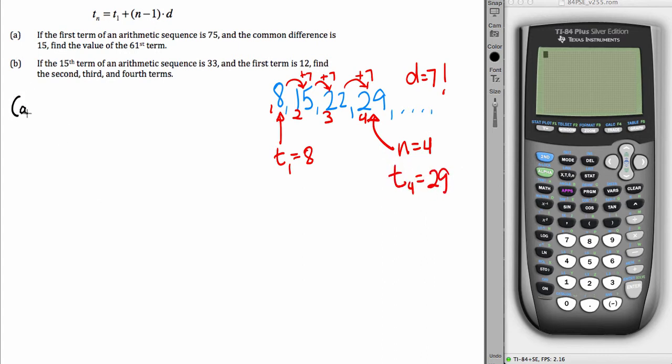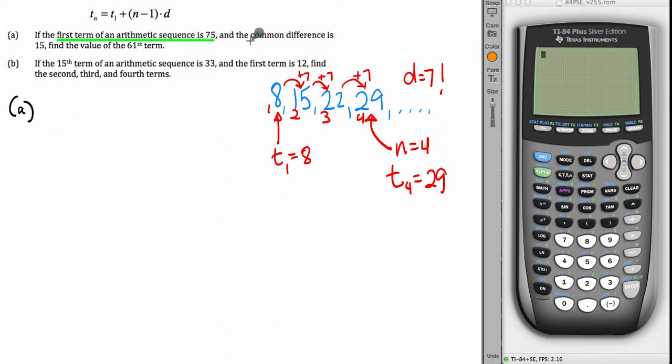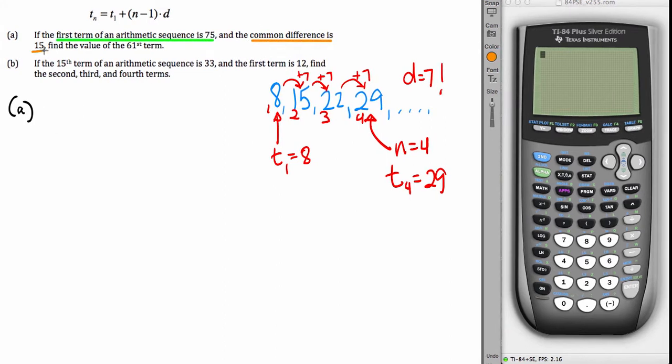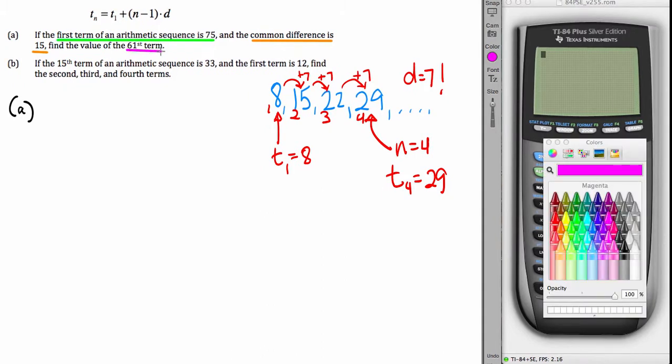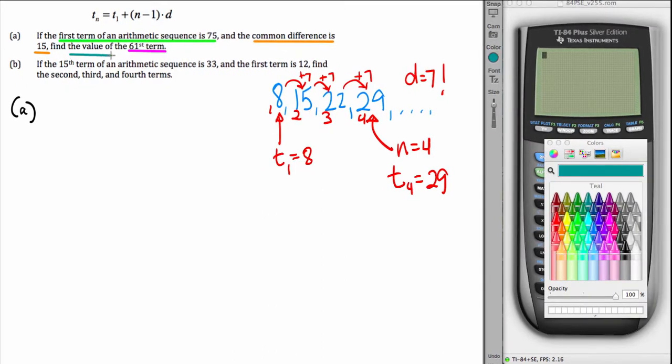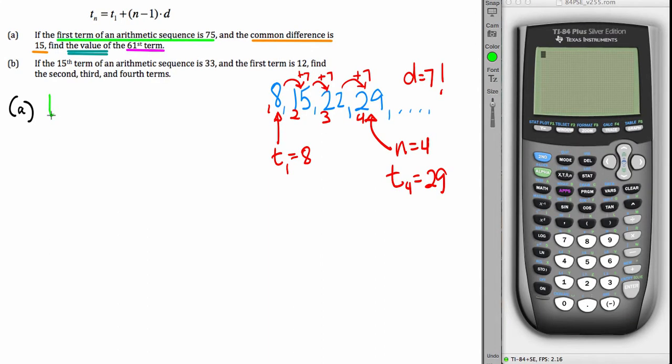Let's look at part A. Reading through the problem, you see the first term is 75 and the common difference is 15. The value of the 61st term is what we're looking for. So we know that it is the 61st term, but we just don't know its value.